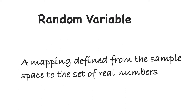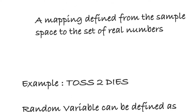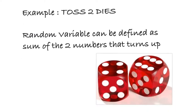If you have forgotten what a sample space is — the sample space is essentially the set of all possible outcomes. To give you a simple example: if you toss a coin, your sample space will contain heads as well as tails. So it is the collection of all outcomes. A random variable is a function defined from this sample space to the set of real numbers.